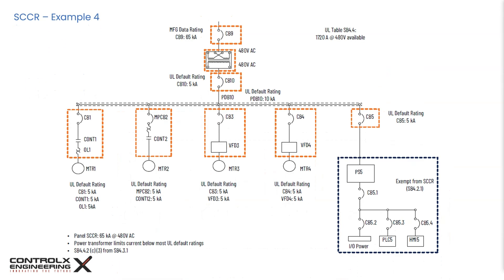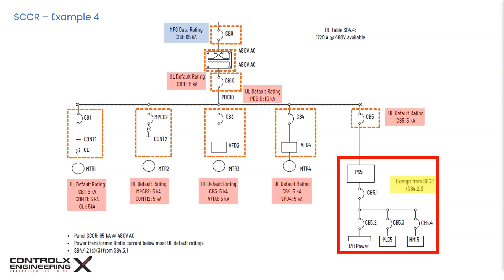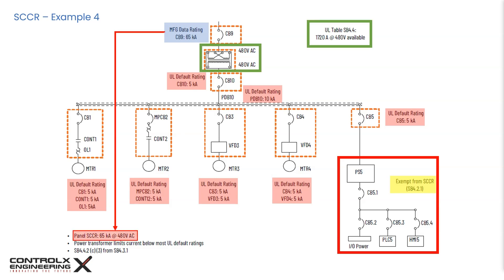The fourth example involves an isolation transformer. The main circuit breaker CB9 has a rating of 65 kA, and all components on the transformer secondary have lower SCCR values. Since the transformer limits the current to 1.7 kA at 480V — below most device ratings — the panel SCCR in this example is 65 kA.